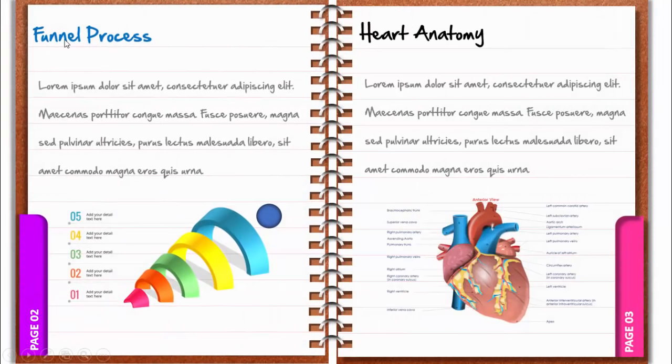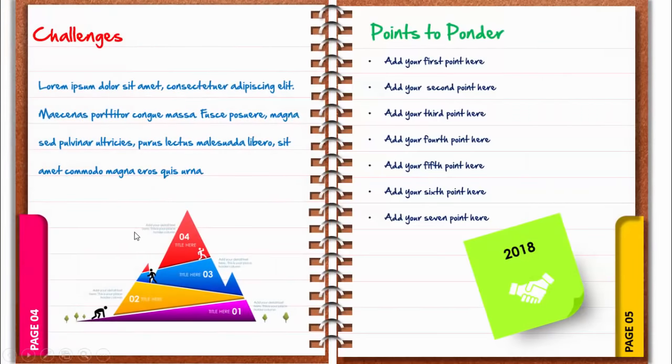Let me show you how it looks. I've put the leather case on top as the cover page, then I've put 'My Presentation Book' as the title. You can put your own title here, and I've added the spiral binding effect. When I click, the book opens and takes you to the first page — this is topic one. You can add details, with page one shown in a different color. Clicking takes me to pages two and three, where I've put a funnel process design and heart anatomy. Then it shows pages four and five, and the last click closes the book with a 'Thank You' slide. You can add as many pages as you want.